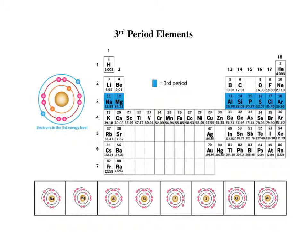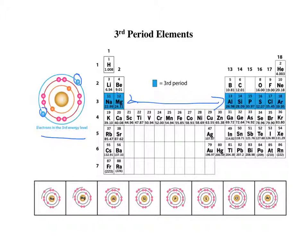The same thing happens for the third period — as we go across from sodium to argon, we are adding electrons into the third energy level. Looking at a particular atom here, I can see the valence electrons are in the third energy level and there are two of them — so this has to be magnesium.